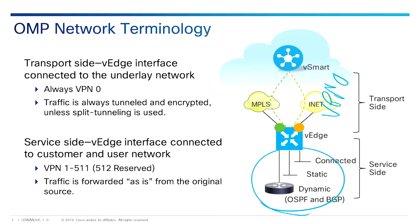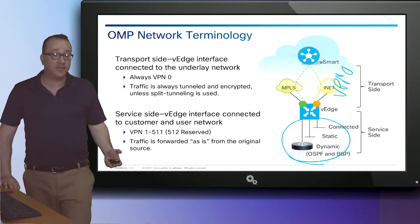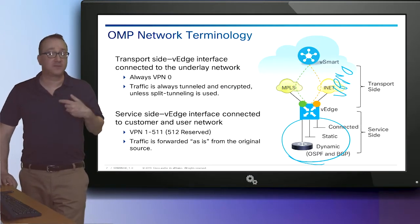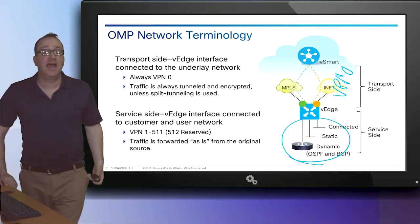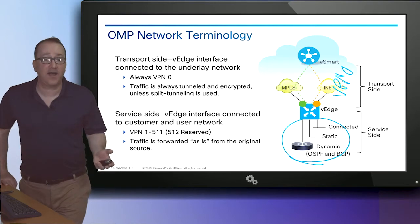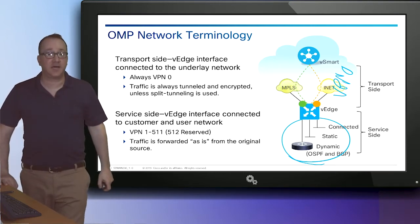To recap the VPN numbering: VPN 0 is always the transport side and the overlay side, VPN 512 is used for management, and VPNs 1 through 511 configure our connection to the inside of our networks — the service side.